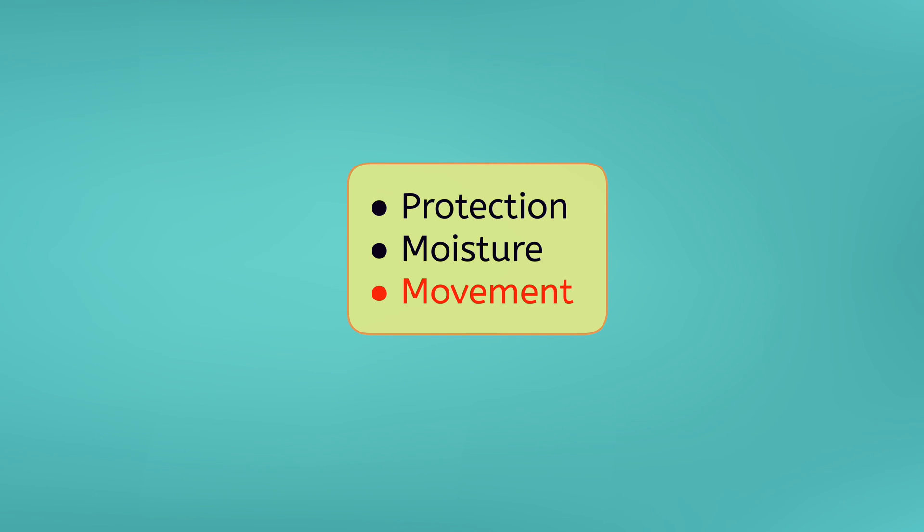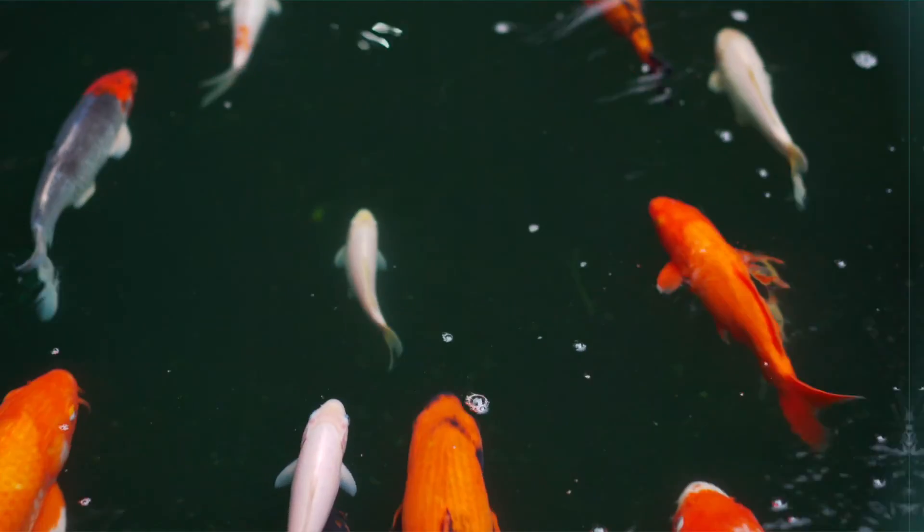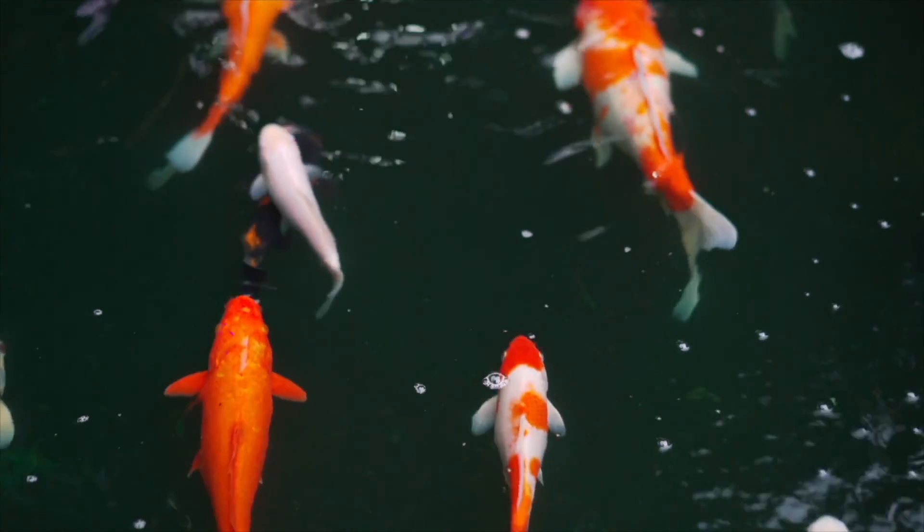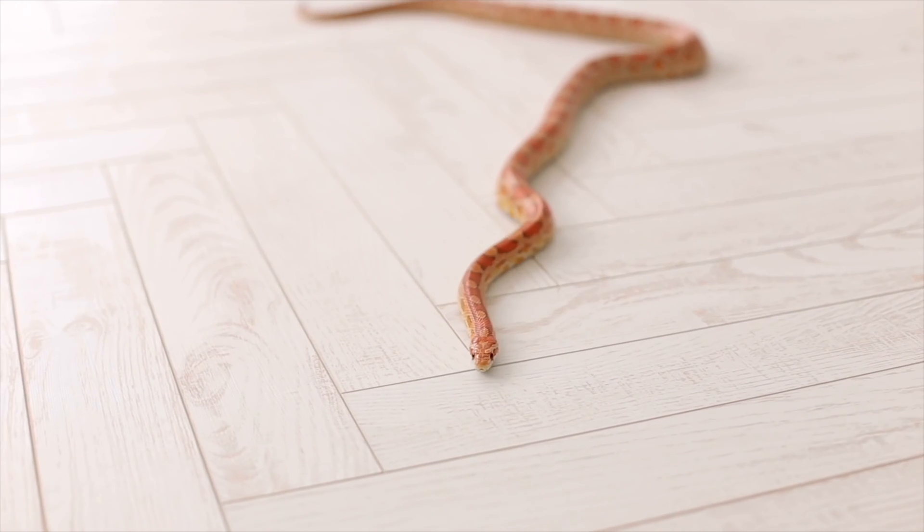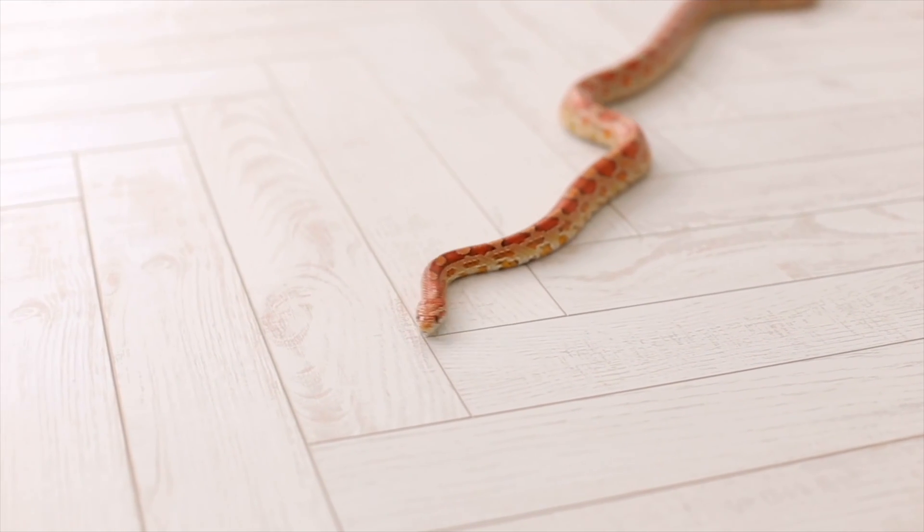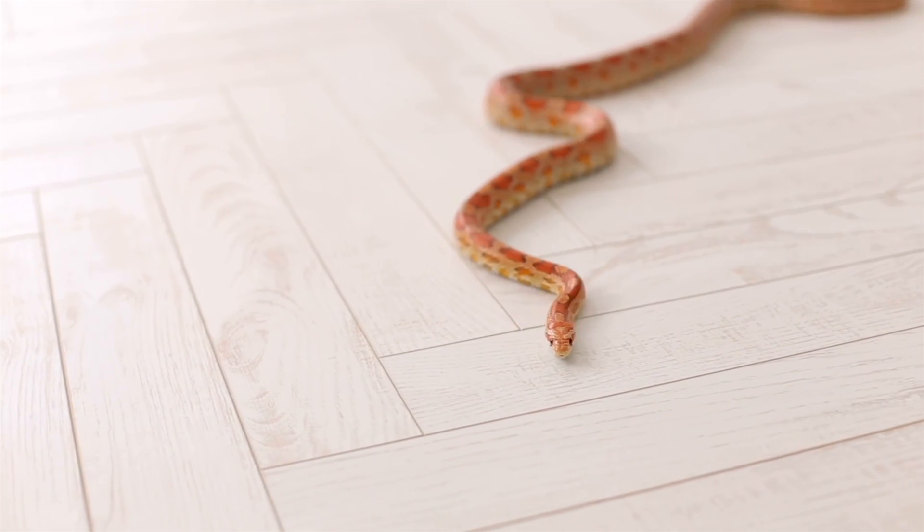Finally, scales help animals with movement or getting from place to place. The scales on fish, for example, help them glide through the water. The scales on this snake help it slide around on the ground since it doesn't have any legs.